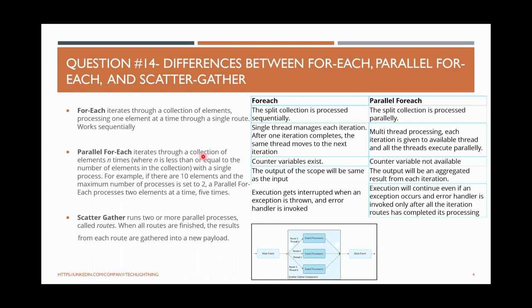Parallel For Each, as the name suggests, goes in parallel. It also iterates through a collection. For example, if there are 10 elements and the maximum number of processes is set to 2, Parallel For Each processes 2 elements at a time, five times. So if you have 10 employee records and set concurrent limit to 2, it picks 2 elements from the collection and runs them in 5 different threads in parallel — completing very quickly using multiple threads.